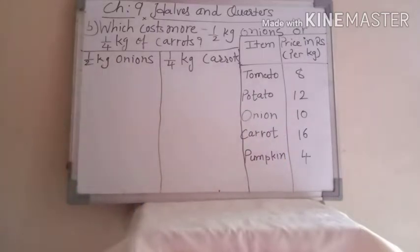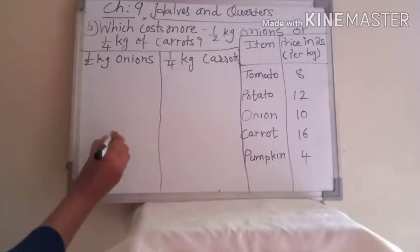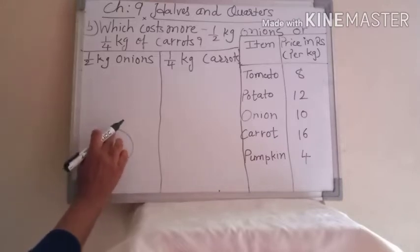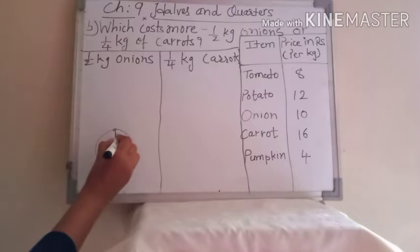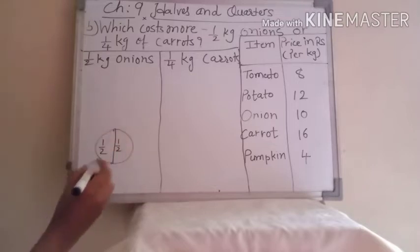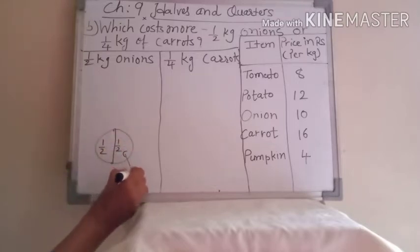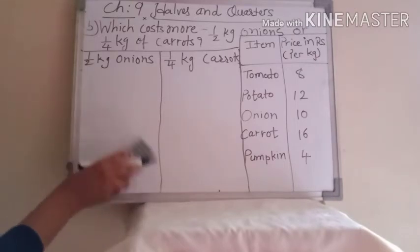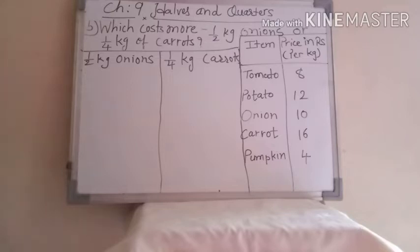Half kg means 500 grams; 1 kg means 1000 grams. Think practically — suppose this circle is 1 kg onion. You have to make it half by making equal parts. So this is the half kg. The total price of 1 kg onion is 10 rupees, so half kg should be 5. So the price of half kg onion is rupees 5.